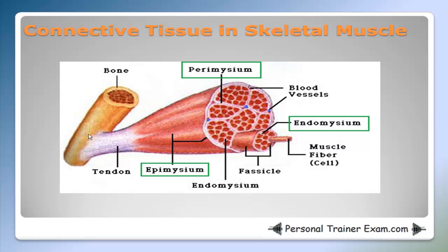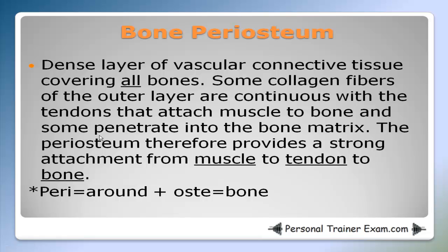The tendon attaches to the outside of the bone, which is called the bone periosteum. The bone periosteum is a dense layer of vascular connective tissue covering all bones. Some collagen fibers of the outer layer are continuous with the tendons that attach muscle to bone, and some penetrate into the bone matrix. The periosteum therefore provides a strong attachment from muscle to tendon to bone. Breaking down the term: peri means around and oste means bone, so periosteum is the dense vascular connective tissue around the bone.